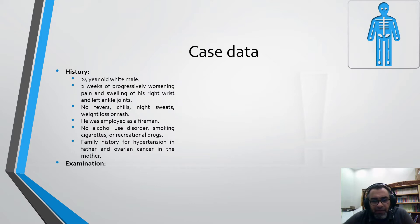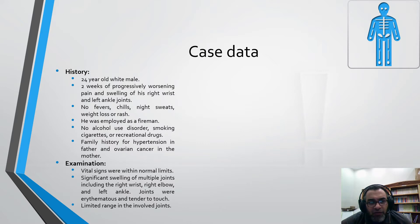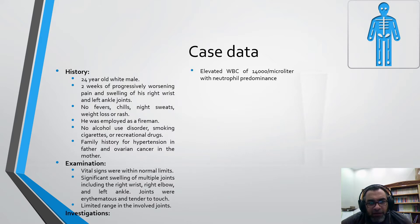Examination revealed vital signs within normal limits, with significant swelling of multiple joints including the right wrist, right elbow, and left ankle joint. The joints were erythematous and tender to touch, leading to a limited range of motion in the involved joints.